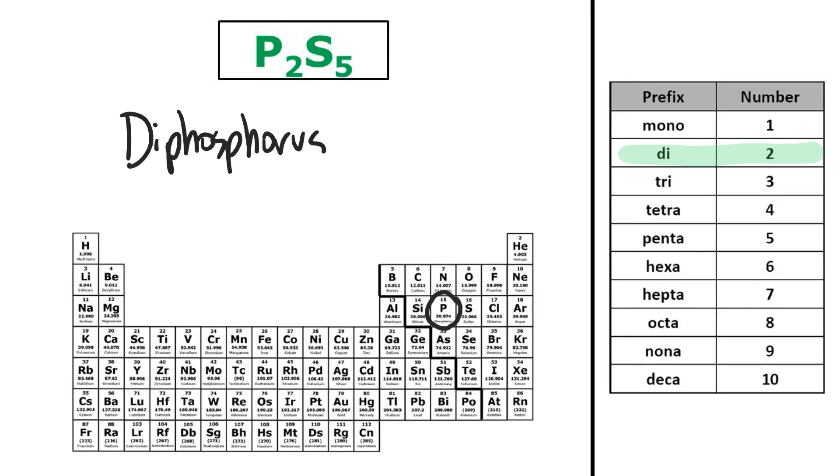And then I have S5, so that would be sulfur, and I would change it to sulfide, but I have five of them, so I will write pentasulfide. So the name of this compound is diphosphorus pentasulfide.